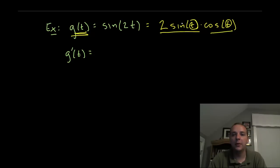The derivative of the first would be 2 cosine t times the second, that's cosine t, plus the first, that's 2 sine t, times the derivative of the second, derivative of cosine is minus sine t.